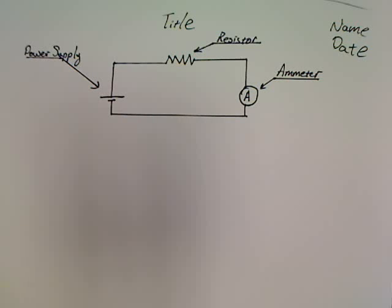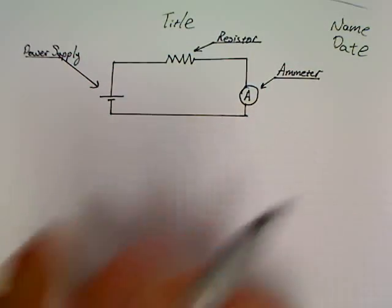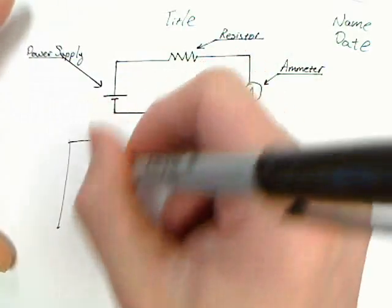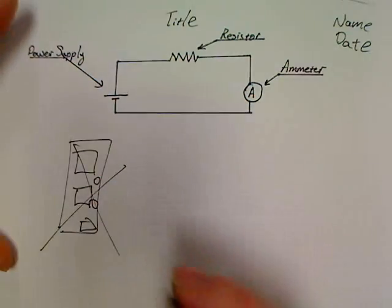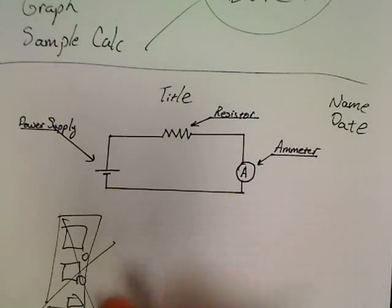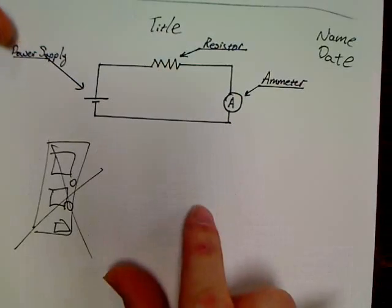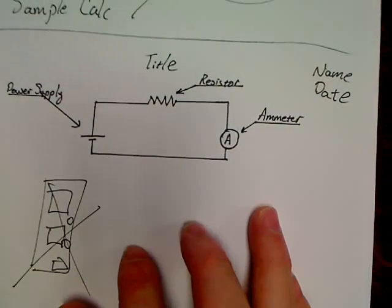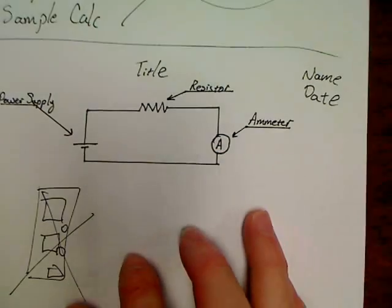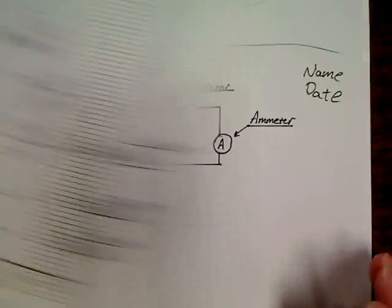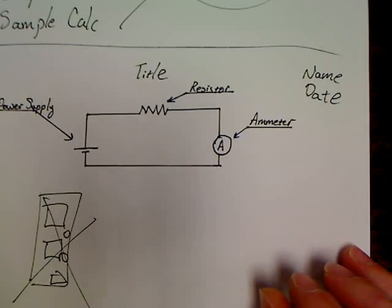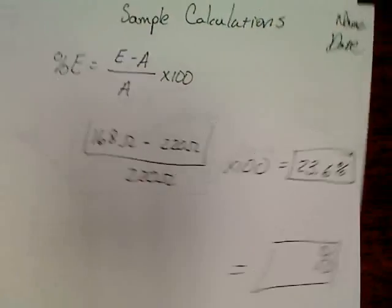So your sketch page will look like nothing but that circuit diagram. That's what I like about electricity labs. Then the report page, the sketch, the data table with all the colors and resistor information, your graph with three lines, and your very last page will be the sample calculation page.